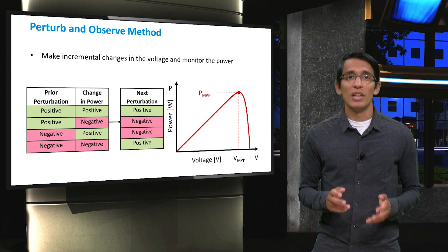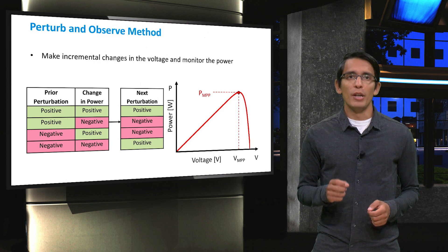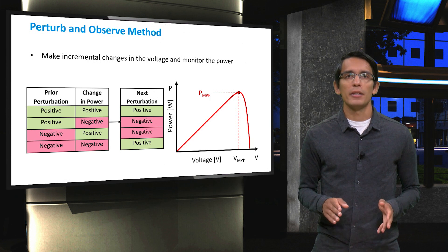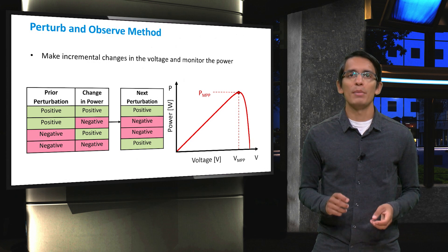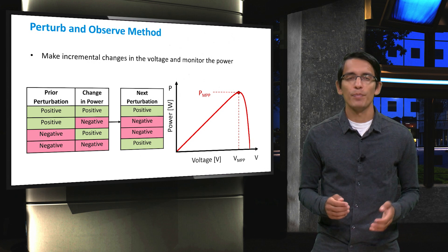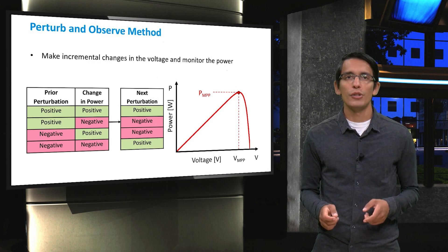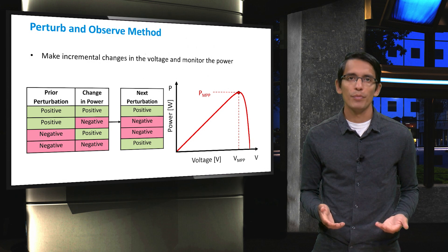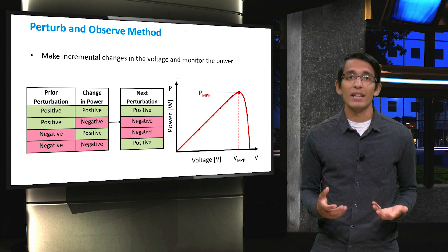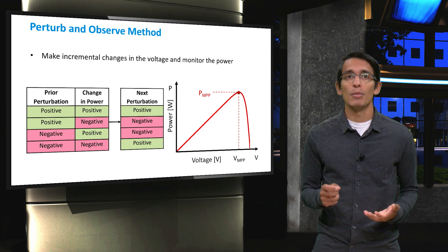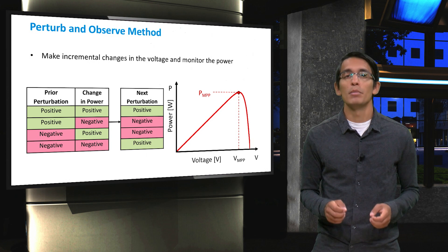One thing you may have noticed in our example is that the voltage perturbations were not all the same size. This can be programmed into the logic in a few different ways. In some cases, moves in the same direction will be large, while moves in opposite directions will always be small. More advanced techniques can store where the power maximum was and only have small moves once a global maximum is reached.